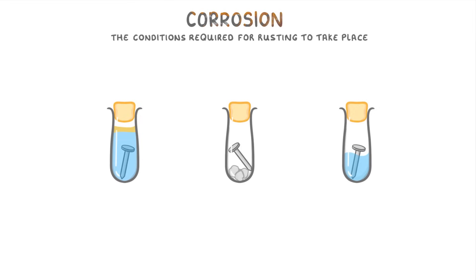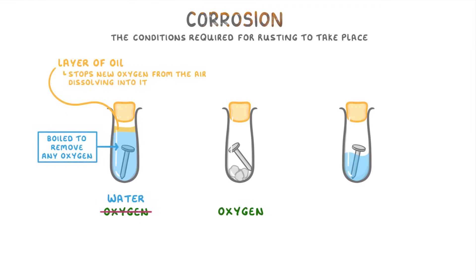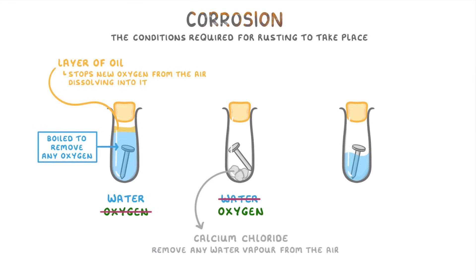To see this in practice, let's imagine three test tubes, each one with an iron nail in it. The first test tube contains water but no oxygen — this is because the water has been boiled to remove any dissolved oxygen, and a layer of oil at the top stops new oxygen from dissolving in. The second test tube contains air and so oxygen, but no water — achieved by having calcium chloride at the bottom to remove any water vapor from the air.